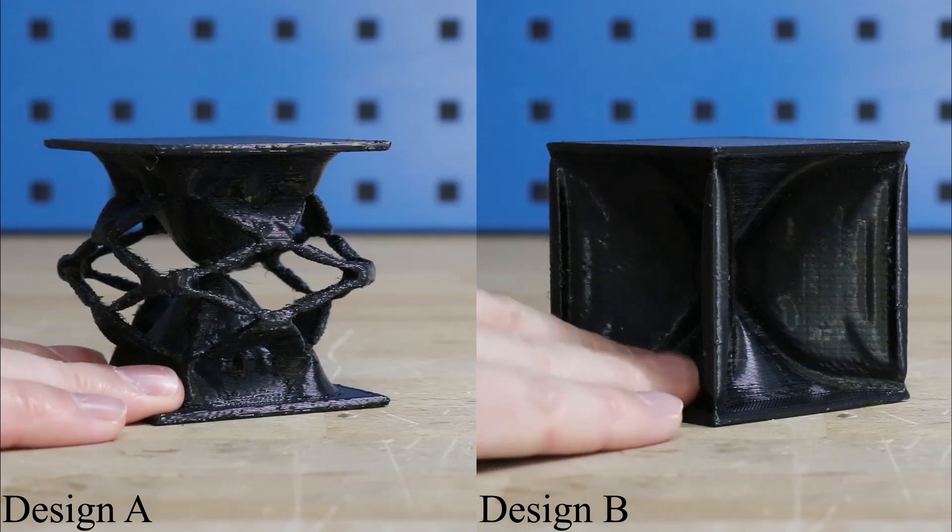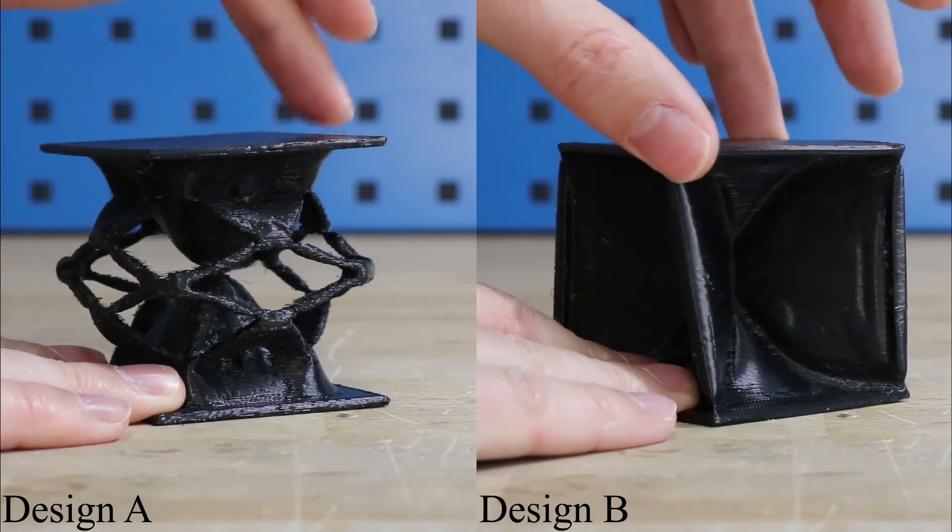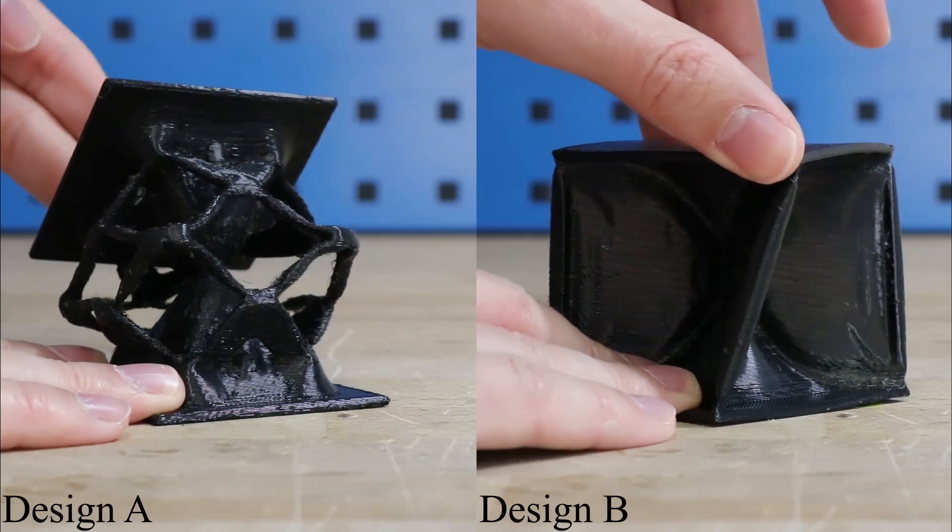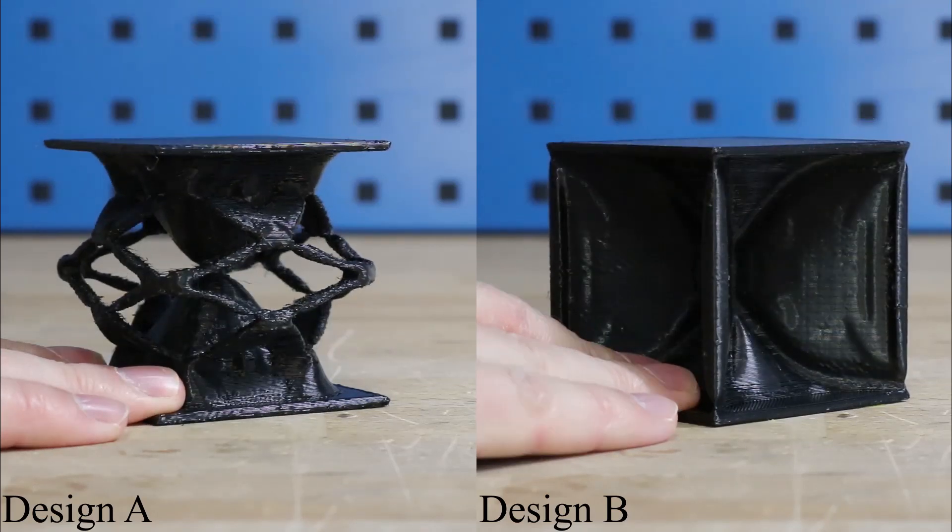Topology optimization is a powerful tool for generating designs in which material is distributed in mechanically optimal ways. In this example, we study two compliant joint designs generated using topology optimization based on linear elasticity.